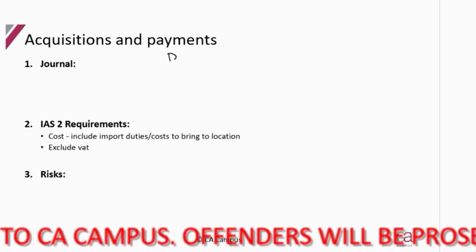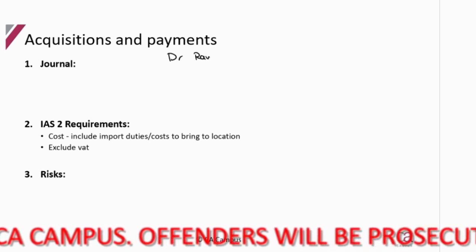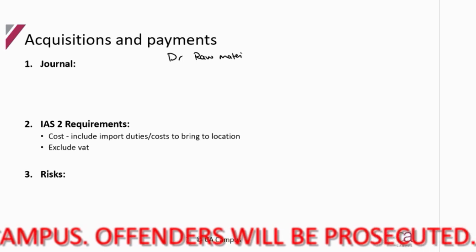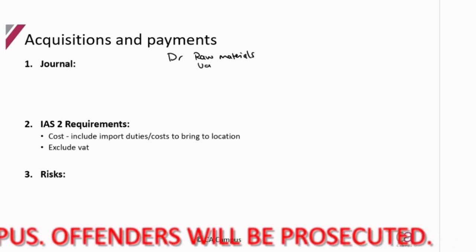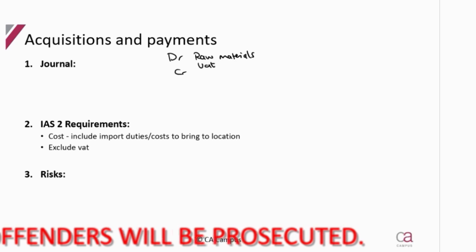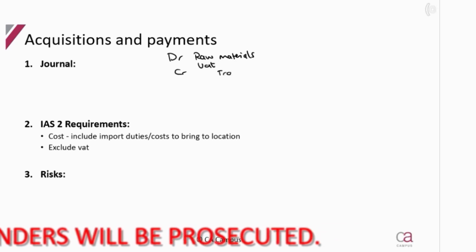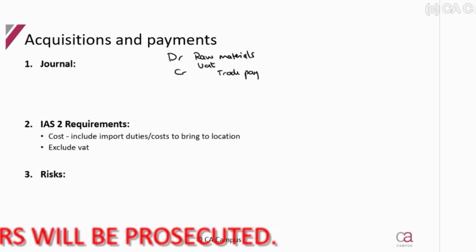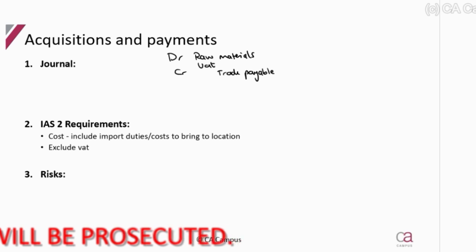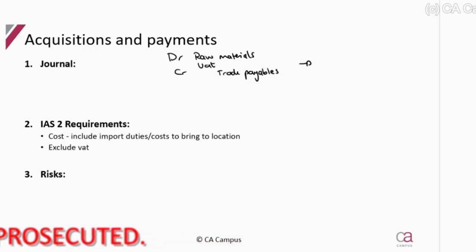So we would have a debit of raw materials, and if it's local there will then be a credit of your trade payables or creditors. And once we have now worked through our credit terms, payment would have to be made, so there would be the debit of the trade payables and then the credit of bank.